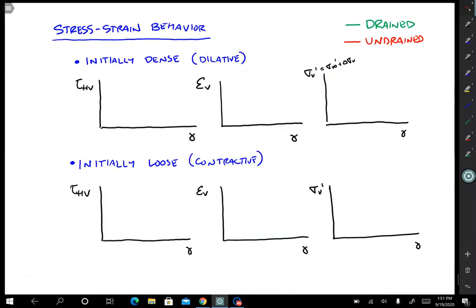So we have tau HV versus gamma, stress versus strain. We have epsilon V versus gamma, so that's volumetric strain versus shear strain. We have to be careful about what strain component we're talking about. And then on this one, we have vertical effective stress, sigma V naught prime plus delta sigma V versus shear strain. So the x-axis is just shear strain for all three. I have three plots up here for a soil that's initially dense or dilated, and then three plots down here for a soil that's initially loose or contractive.